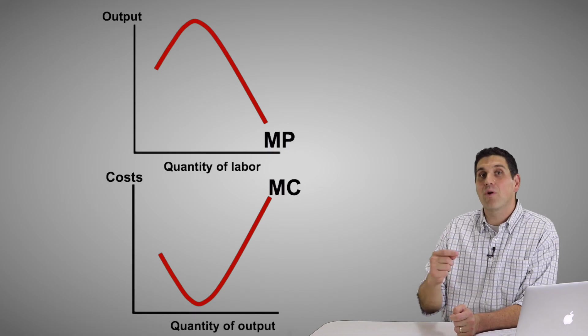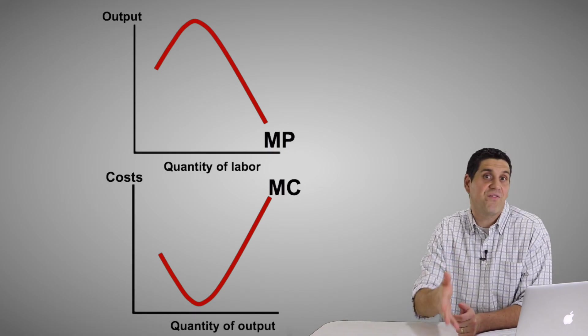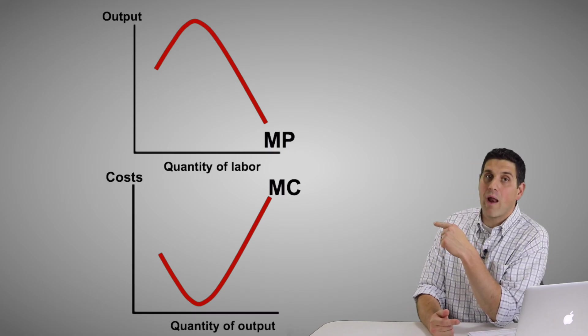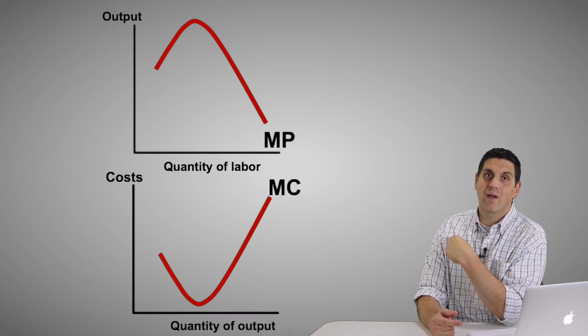Then each worker eventually produces less additional output because of fixed resources and the law of diminishing marginal returns. So the marginal product goes up, then eventually starts going down.